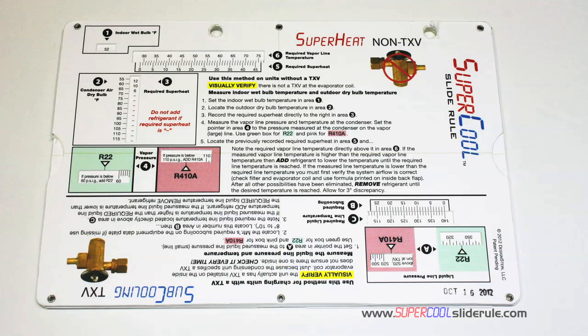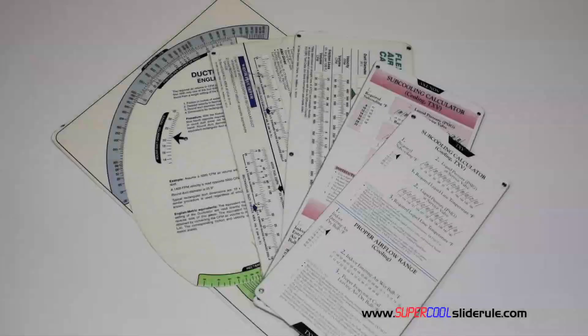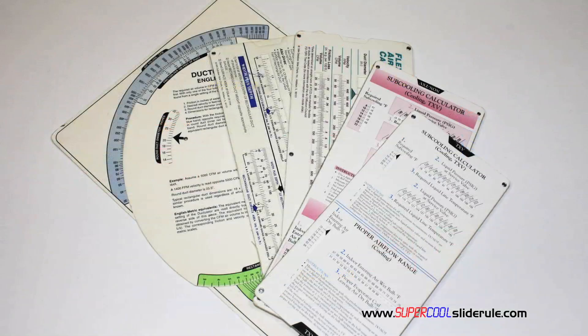I'd like to take a minute to introduce you to the coolest tool in the HVAC industry. Historically, technicians have carried four or five different slide rules: one for R22, one for R410A, one for metal duct sizing, one for flexible duct sizing, and yet others for diagnostics or troubleshooting.